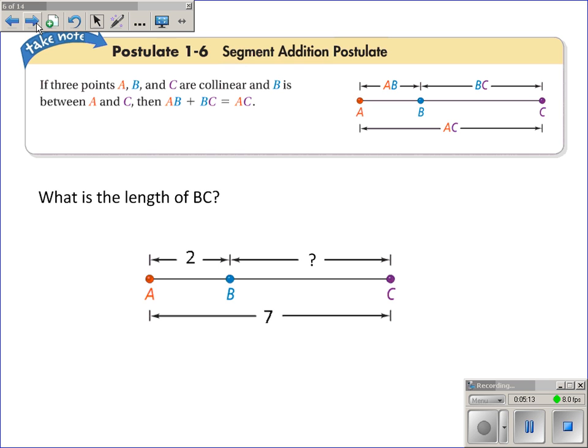That kind of leads us into the segment addition postulate. Again, a postulate is an accepted statement of fact. If three points A, B, and C are collinear, meaning on the same line, and B is between A and C, then the length AB plus length BC is equal to the length of AC. So if I add up all the parts, it's equal to the whole, which I hope makes sense.